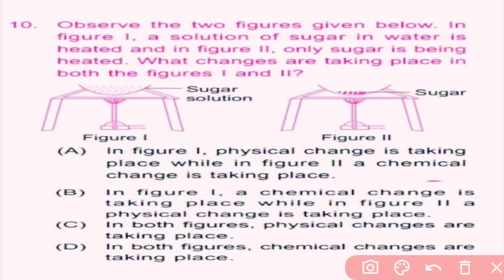Question number ten: observe two figures. In figure one, a solution of sugar in water is being heated. In figure two, only sugar is being heated. In figure one, sugar is separated from water by evaporation — it is a physical change. In figure two, sugar is heated and a new substance is formed which is not reversible — it is a chemical change. So option A — in figure one a physical change is taking place while in figure two a chemical change is taking place — is the correct answer.